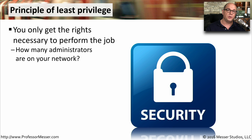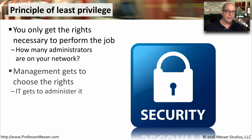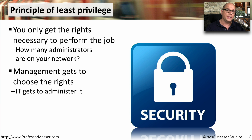We call this the principle of least privilege, which means that you should only have just the rights and permissions necessary to do your job. Exactly what those rights and permissions are will depend on what your job happens to be. The management of your company will usually determine what your job role is, and then it's up to IT to match your job role with the rights and permissions on the network.